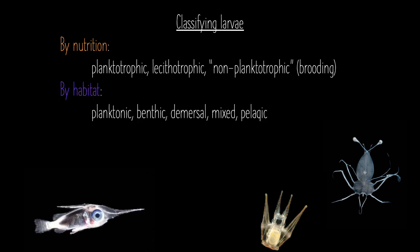We can also classify larvae by their habitat. Planktonic means up in the water column; benthic means on the bottom. Demersal is a term used chiefly for fish that live close to the floor of the sea or a lake — not commonly used with marine invertebrates. Mixed refers to an organism that spends part of its life cycle in the water column and another part on the benthos, while pelagic refers to the open water.